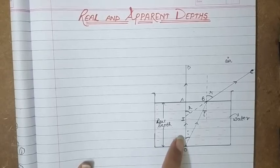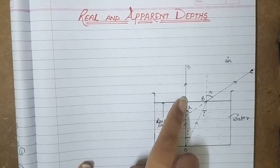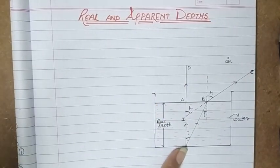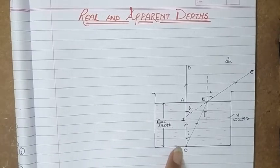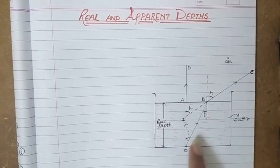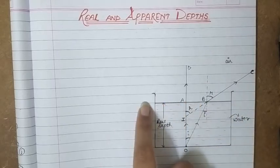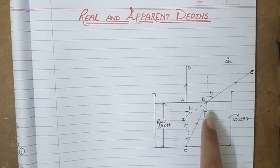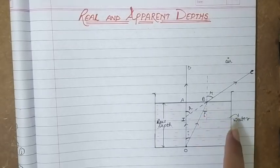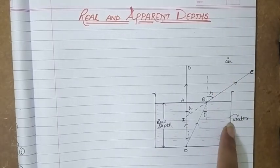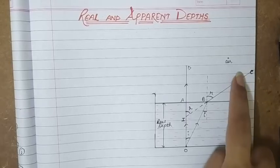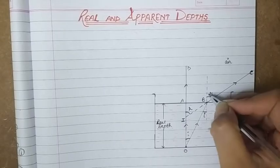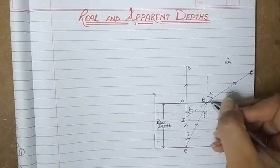The light ray coming normally to the surface of water will go undeviated, as we know that whenever light passes from one medium to another along the normal, it passes undeviated along the same path. But there are rays which are coming to the surface at a certain angle — for example, ray OB, which comes to this interface at an angle I. The ray gets refracted, and since it is moving from a denser to a rarer medium, the angle of refraction will be greater than the angle of incidence.